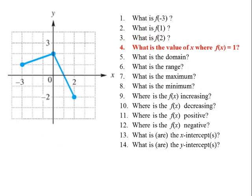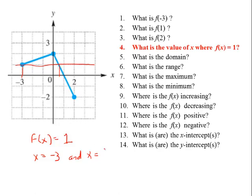What is the value of x when f of x equals 1? We know that f of x equals 1 means the y value is 1, and we want to know the ordered pair or pairs where y is 1. We go to the y-axis and look for 1. We see there are 2 x's — this x and this x — so x equals negative 3 and x equals positive one-half.